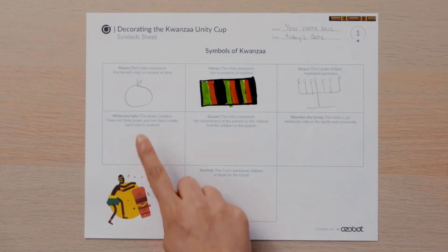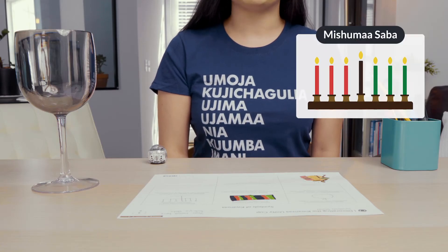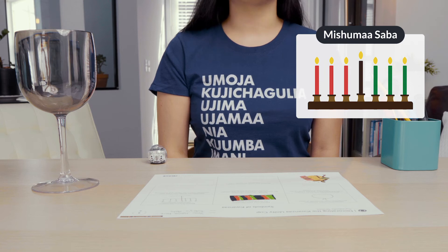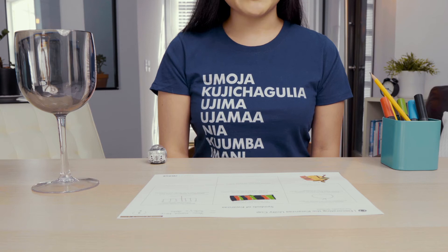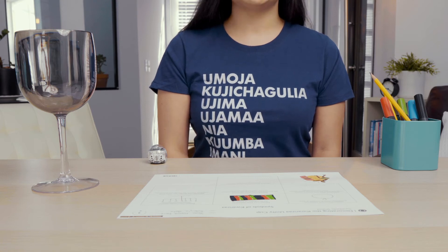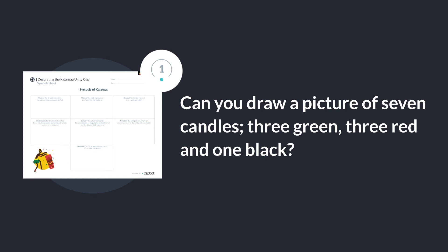Next, look for the box that says Mishuma Saba, or the seven candles. Each candle represents one of the seven basic principles people are urged to live by. These principles are unity, self-determination, collective work and responsibility, cooperative economics, purpose, creativity, and faith. Can you draw a picture of the seven candles — three green, three red, and one black?